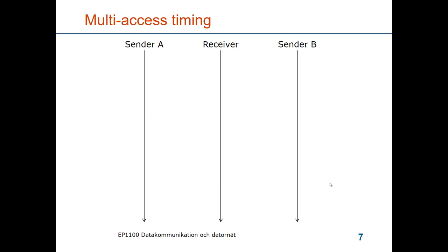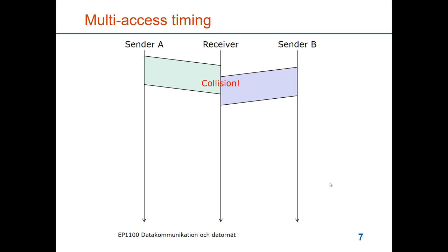Let's look at another example. Sender A sends a frame and sender B sends a frame, and they collide. At the receiver, it would first have seen the preamble of the frame from A and logged on to it. If it managed to receive the header, it would have a length field indicating how many bytes of data to collect before end of frame, where it finds the CRC to verify the frame. When the collision occurs, the data received is interfered by the frame from sender B, and the CRC results in error detection.